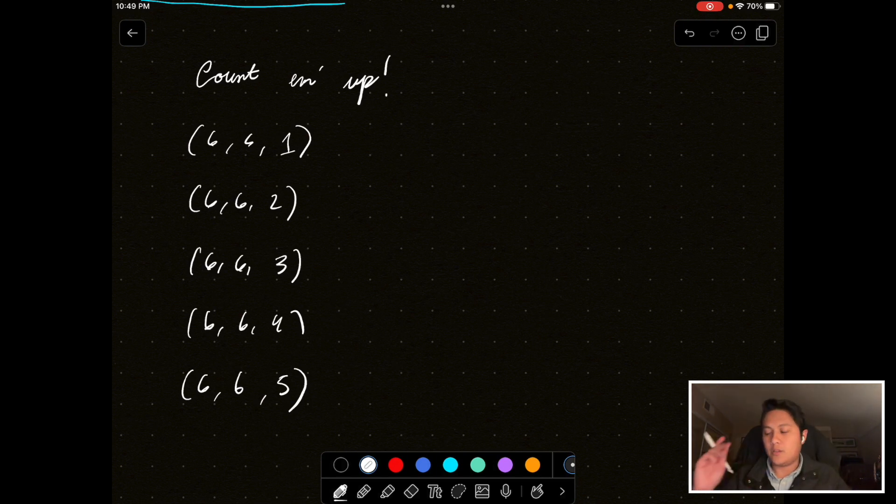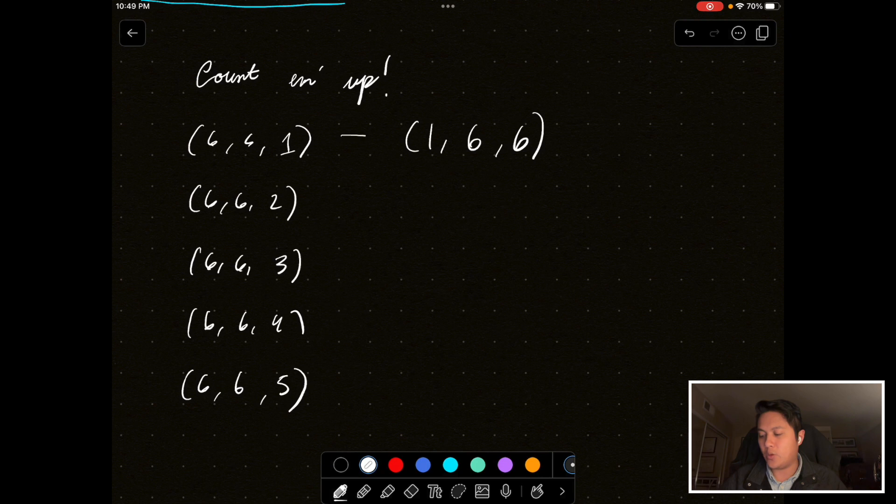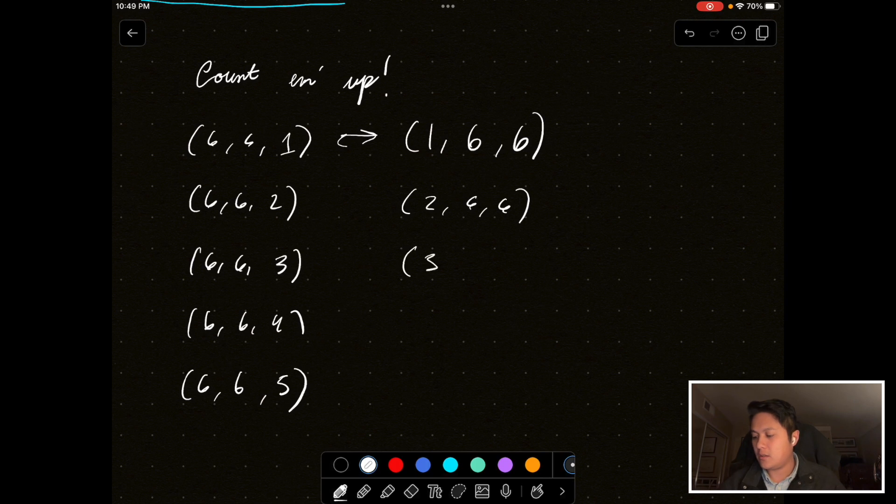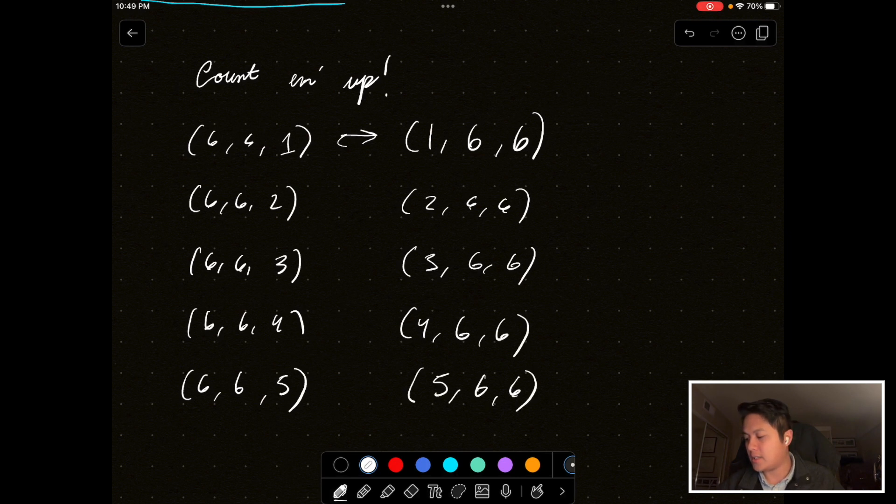We can also do the case, the opposite case, which I described before, right? Where we can have any number besides six as the first roll, like one, and then we can get six, six. So, we can see that this is just sort of swapping the order of these two, right? And so, likewise, we can write two six, six, three six, six, four six, six, five six, six.